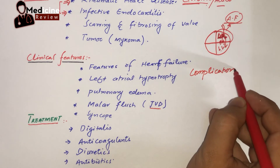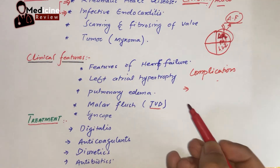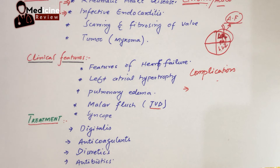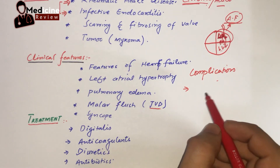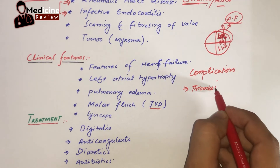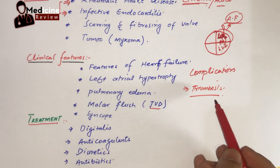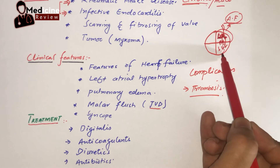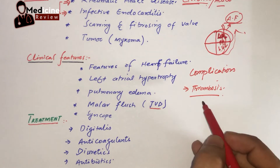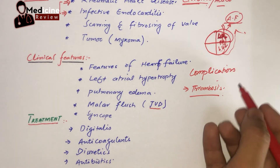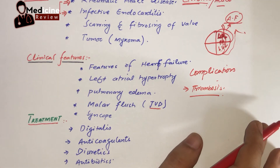Complications of mitral stenosis include heart failure, which is itself a lethal complication. Another important complication is thromboembolic phenomena: due to left atrial dilatation and stasis, thrombosis can occur. That thrombus can detach from the left atrium and travel to any part of the body — specifically the brain — causing a stroke.